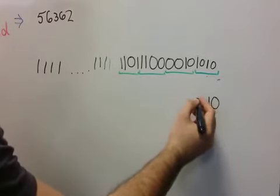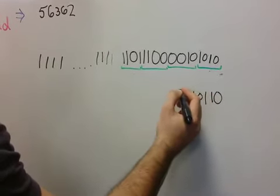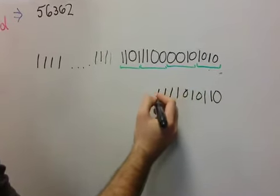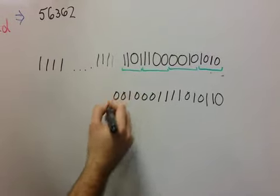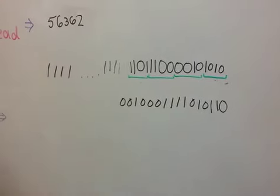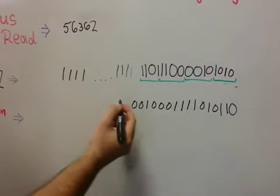So the zero becomes a one, zero, so on and so forth. Four, three, one, zero, zero. And this would mean every one here that previously represented the sign becomes a zero.